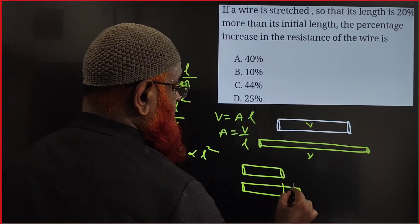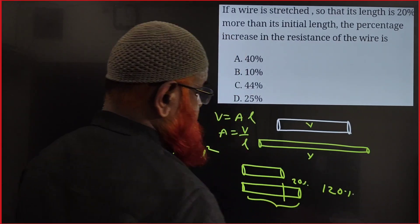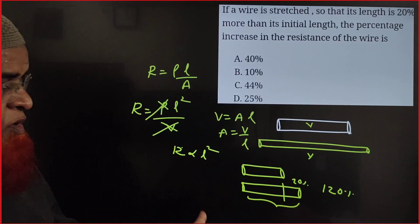So if length is increased by 20%, what does it mean? See, previously length was this much. Here 20% length is increased, so totally how much it becomes? Now it becomes 120%. It becomes 120%, length becomes 120%, understood?